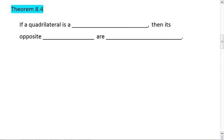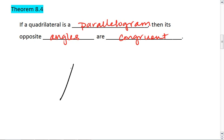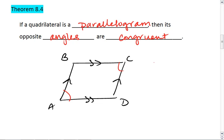The next characteristic is theorem 8.4. If a quadrilateral is a parallelogram, then it turns out that its opposite angles are congruent. So again, we'll have this set up with a parallelogram. One pair of parallel sides, two pairs of parallel sides. This means that angle A is congruent to angle C, and angle B is congruent to angle D.